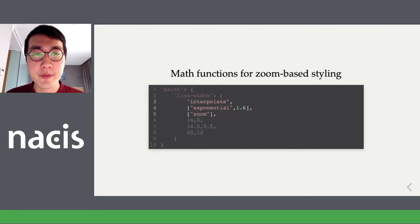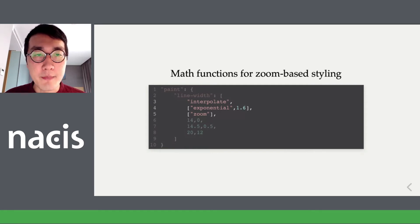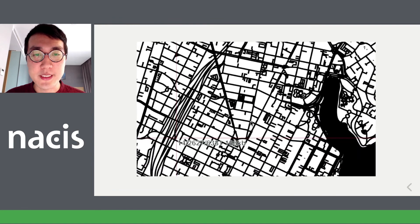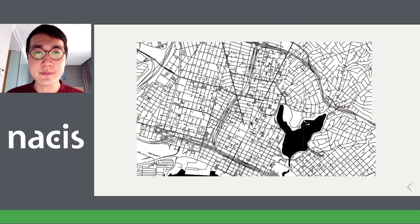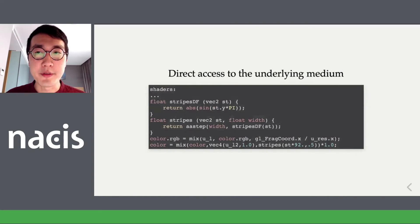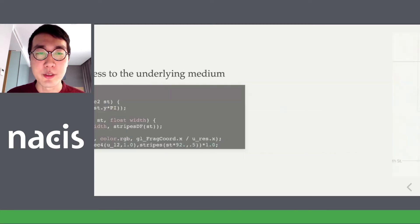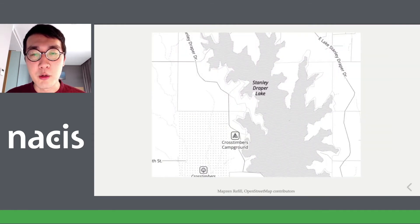Another powerful idea in these map languages is defining a property as a function. Using the Mapbox GL JSON language, I can express line width as a function of zoom level, so map features scale based on a mathematical expression. In some cases I might even go down in abstraction — in the Tangram YAML system, I'm able to embed GLSL shaders directly inside the YAML. This is pretty low level, but it allows me to do things like have textures that are really crisp on the map.